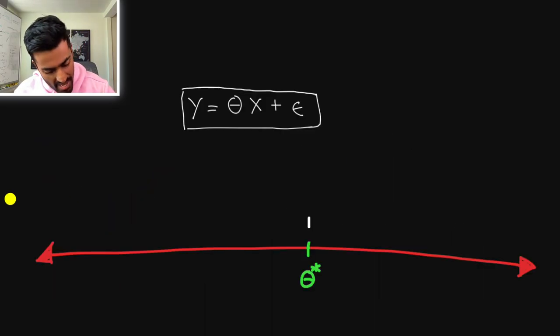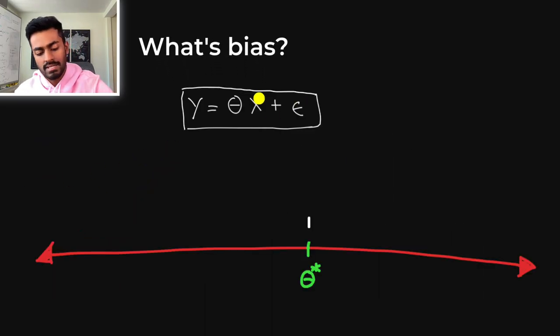So let's talk about bias. Let's say that we have an extremely simple linear regression model in the form y equals theta x plus some epsilon term. Let's also say that the best value of theta that it can possibly have in this form is the value 1 that I've labeled in green here at theta star.